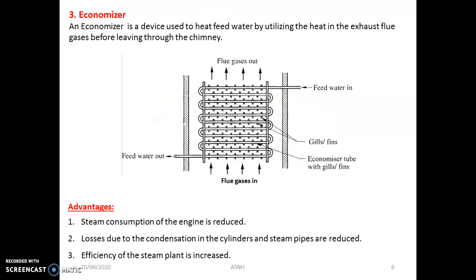The next important accessory of the boiler is the economizer. Whatever water is collected in the condenser enters the economizer, which has a number of coils. Feed water enters from the condenser and warm water exits through the tubes of the economizer, then enters the boiler water drum. No separate electricity is required for its working — it works with the help of flue gases generated after the combustion process. The advantages are: steam consumption of the engine is reduced, losses due to condensation in the cylinder and steam pipes are reduced, and the efficiency of the steam power plant increases.